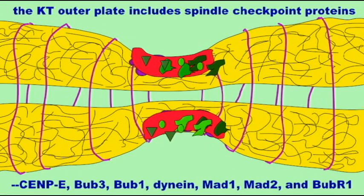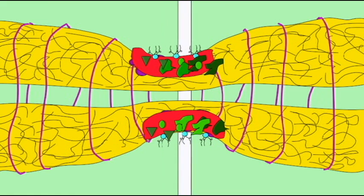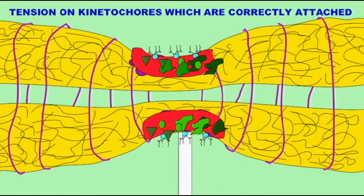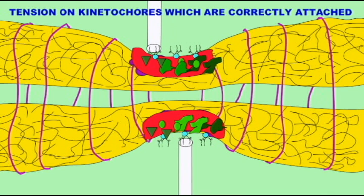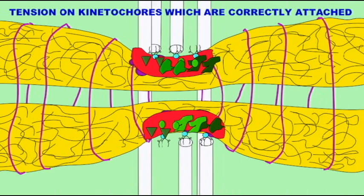There is a checkpoint in the cell division cycle in which the cell progression through the cycle can be stopped if certain parameters are not met. This allows the cell to stop cell division if a cell is not ready to prevent a potentially abnormal cell or even cancerous cell with an improper number of chromosomes.